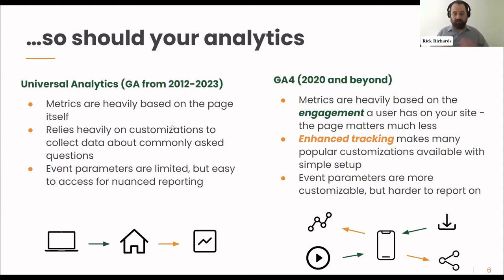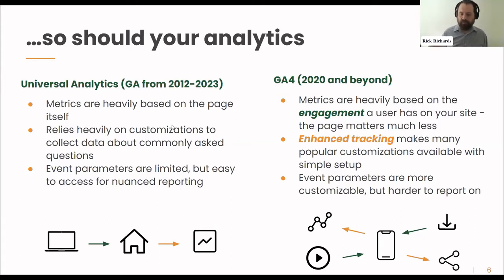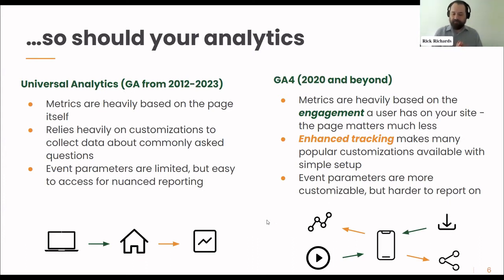The nice thing was you could put whatever data you wanted in there, as long as it wasn't personally identifiable information like a name or email address. But as we move into GA4, metrics are heavily based on engagement a user has on your site. When you look at the default report, it doesn't tell you bounce rate and page views — it tells you how many engaged users out of your total users you have and how long they were engaged. Someone might have their phone open, hit play on a video, hit a download button, or scroll through an article.